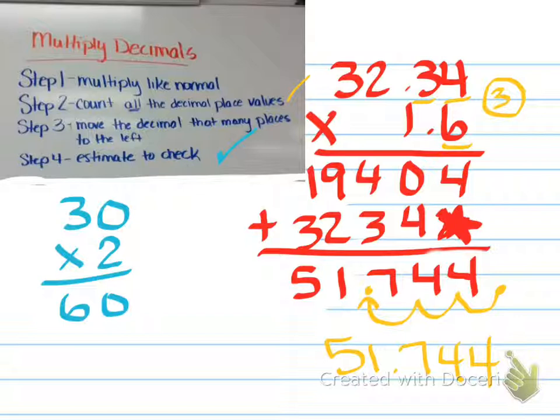If I had forgotten to move my decimal, 51,744 is not close to 60 and would not make sense. So this is just like one of those, oh wait a second kind of moments where I go, wait, this is 60. How could this be 51,000? It's just one of those things.